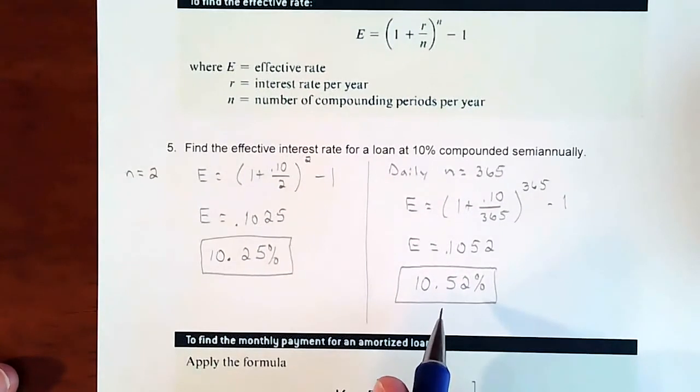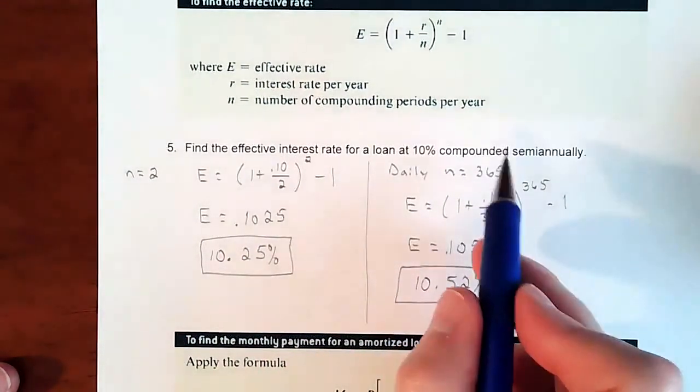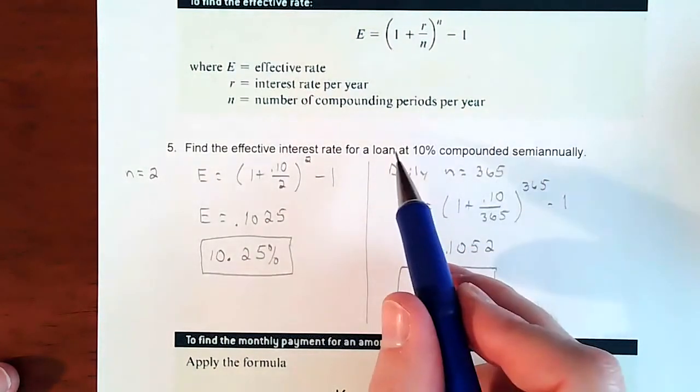Okay, so that was called an effective rate. Effective rate is really just what are you really earning on something if something is compounded more than one time per year. Thanks.